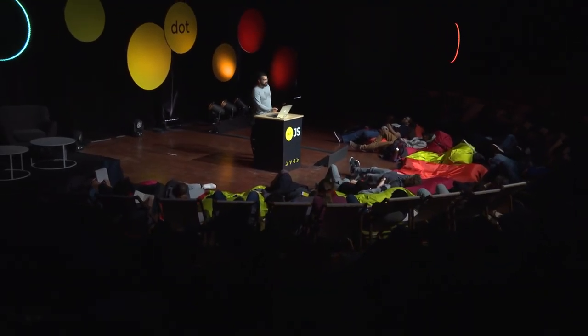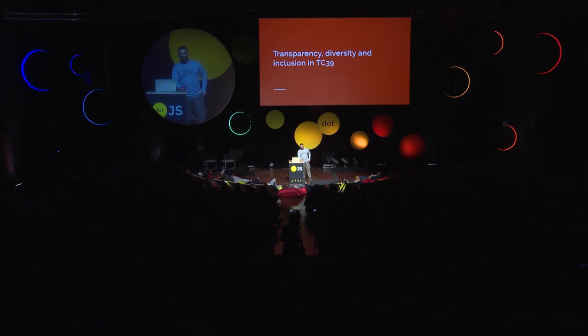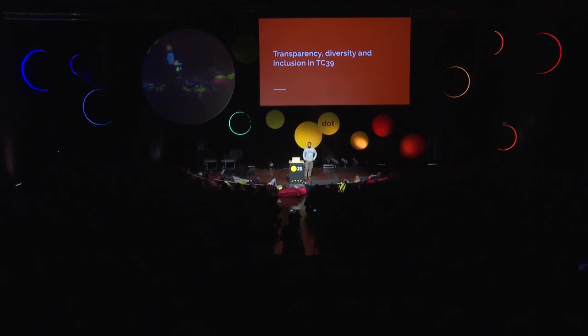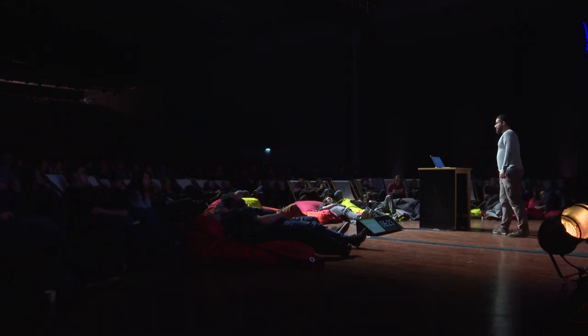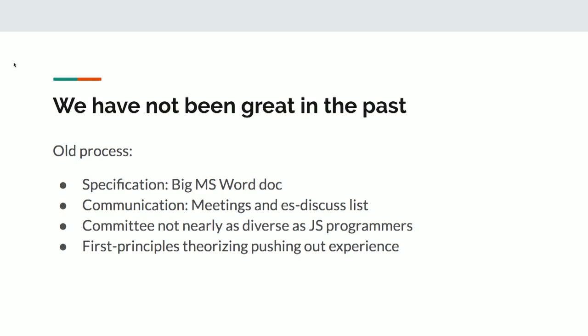But maybe more important than what we're doing exactly is how we're doing it. I think we can only come to the right answers and the right strategy for how to improve JavaScript for programmers if we really have transparency and diversity and inclusion in how we function. And to be honest, we haven't really been great about this in the past.